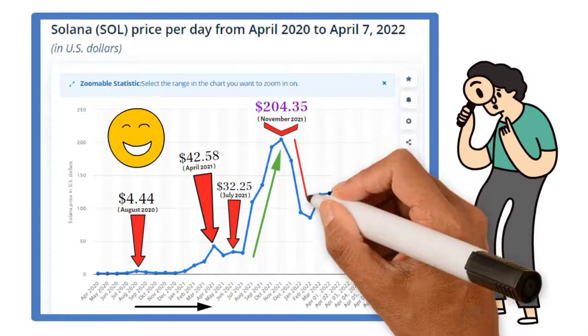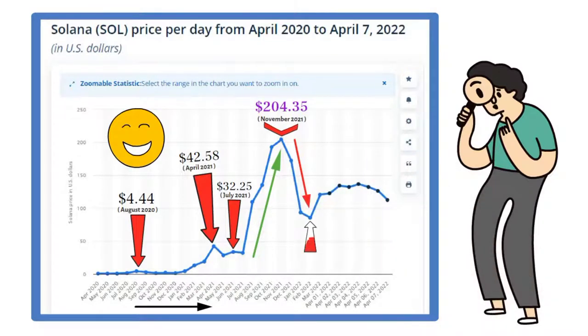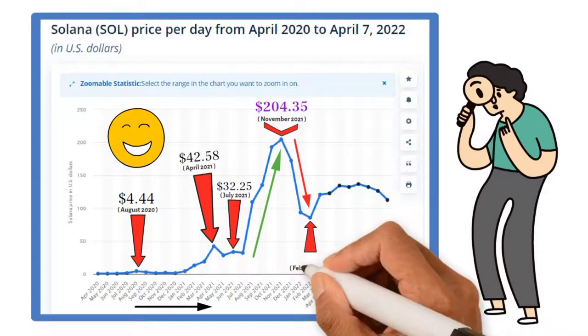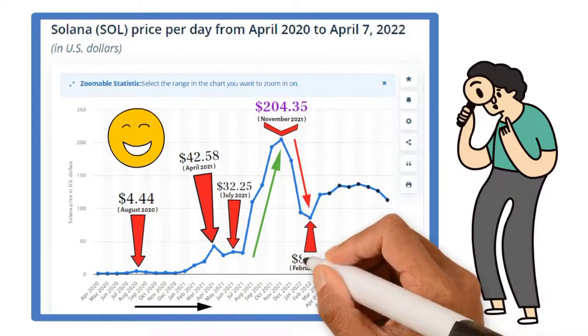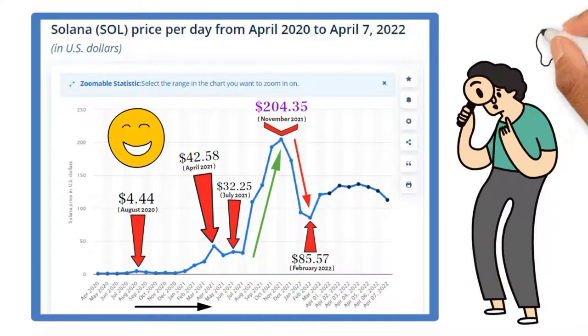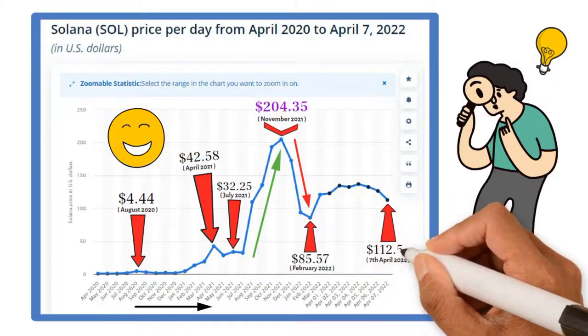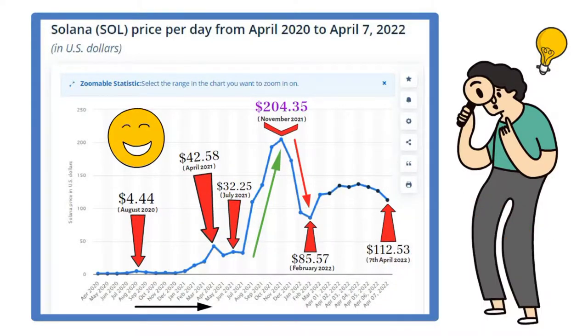But of course, it couldn't go on forever. It decreased exponentially as well till February 2021, making it worth $85.57 US dollars. Later it didn't change as much but had a few deviations. As of the 7th of April 2022, its value is reportedly $112.53 US dollars.